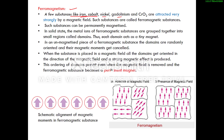Ferromagnetism: substances like iron, cobalt, nickel, gadolinium, and CrO₂ are attracted very strongly by a magnetic field — these are ferromagnetic substances. They can be permanently magnetized. For example, when an iron piece is kept in contact with a magnet for some time, it itself becomes a magnet, retaining magnetism after the magnet is removed. In the solid state, metal ions of ferromagnetic substances are grouped into small regions called domains, each acting as a tiny magnet.